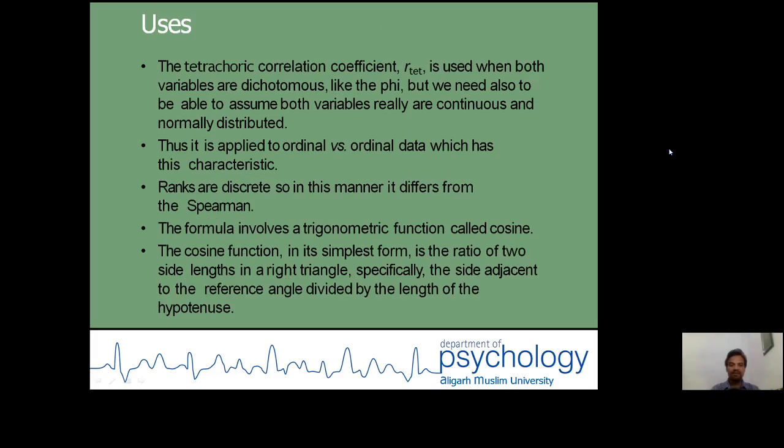Uses. The tetrachoric correlation coefficient is used when both variables are dichotomous, like the phi. But we need also to be able to assume both variables really are continuous and normally distributed. Thus it is applied to ordinal vis-à-vis ordinal data, which has this characteristic. Ranks are discrete, so in this manner it differs from the Spearman.